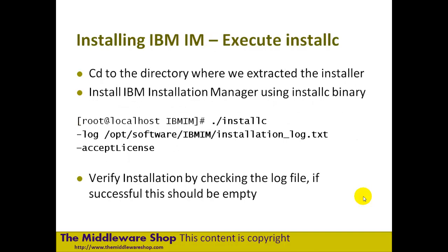When you extract the IBM Installation Manager, you install it by running the install command. You can see here that I've passed the accept-license flag, which automatically accepts the license as it's installing. Make sure you check log files when you install it. It's quite a simple installation. Windows is slightly different — it'll use Program Files. The log files are a bit harder to find in Windows because of the user profile, so you might have to hunt around for those.